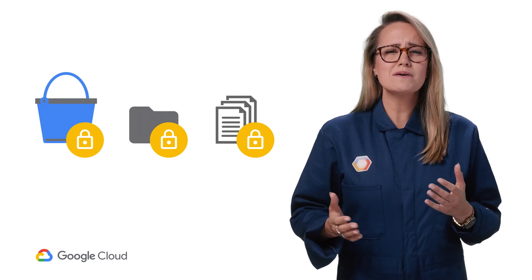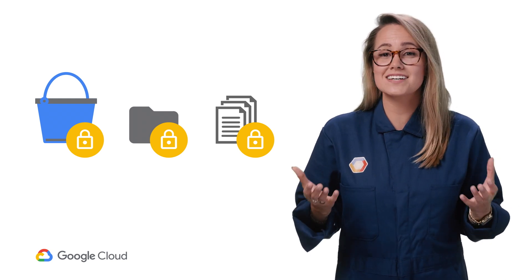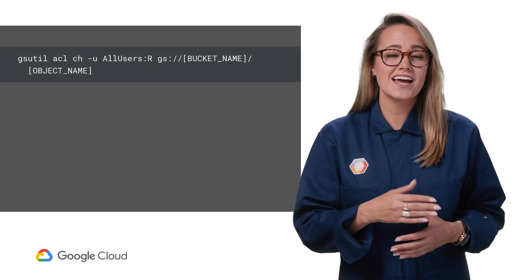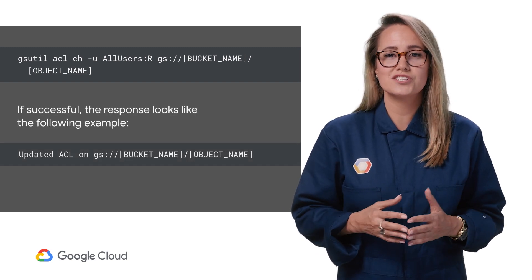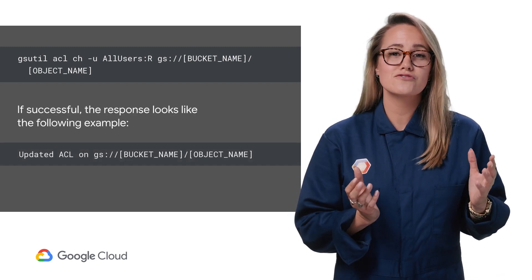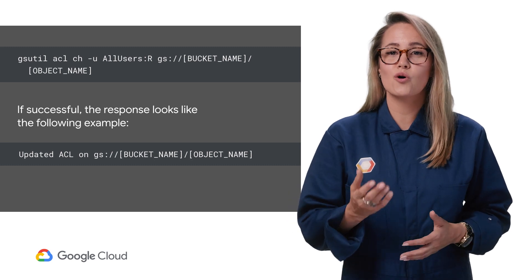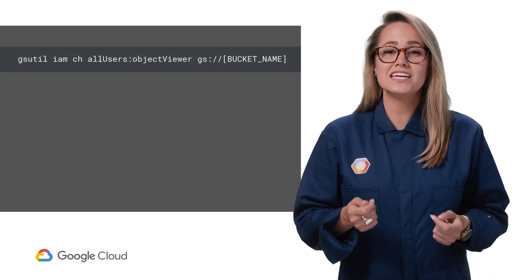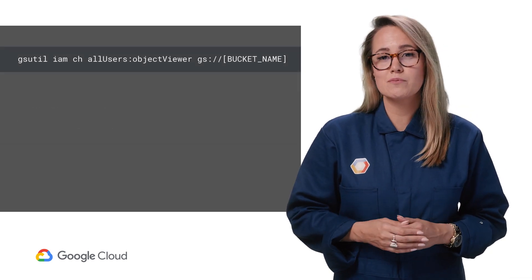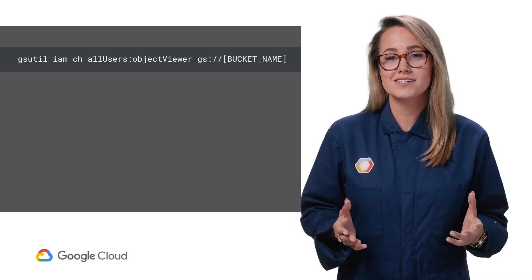Keep in mind that access is managed at the object level, meaning that a single bucket of storage can hold data objects with varying levels of accessibility. To change the access permissions for an object, you simply need to edit those permissions, either through the gsutil command line tool or in the Cloud Console. And to save time, you can even change the edit permissions for an entire bucket at once.